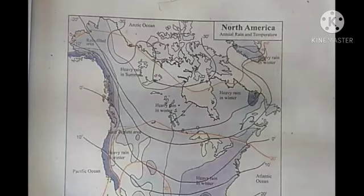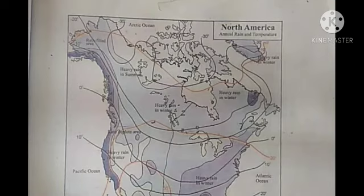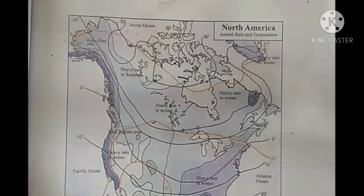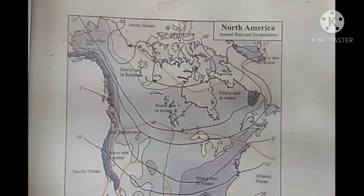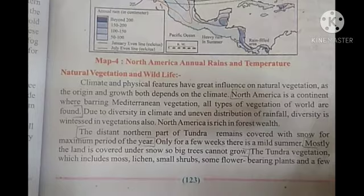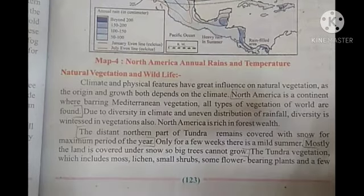The North America annual rain and temperature map is given here. You can understand where there is heavy rainfall and where there is low rainfall. Regarding natural vegetation and wildlife: climate and physical features have great influence on natural vegetation, as the origin and growth of vegetation both depend on the climate. North America is a continent where all types of vegetation of the world are found, from Mediterranean vegetation to others.